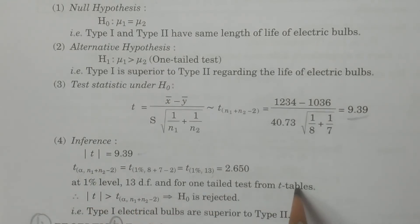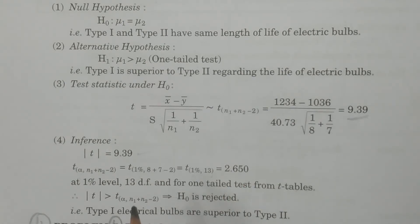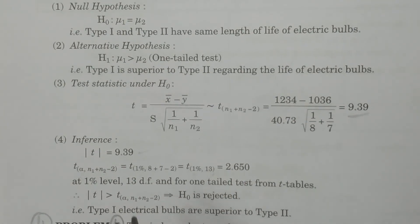the value is 2.650. It is called significant value or tabulated value. So therefore, if you compare these two, 9.39 is always greater than 2.65. Therefore, modulus of t is greater than t(1%, 13),